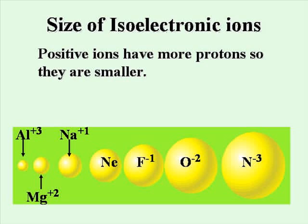Isoelectronic ions are the stable ions formed when atoms gain or lose electrons to achieve noble gas electron configurations. The more electrons that an atom gains, the larger its ion will be. The more electrons that are removed from an atom, the smaller the ion will be. So parent atoms are always larger than positive ions and smaller than negative ions.